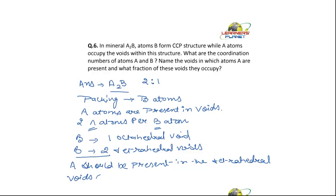So these all are present in the tetrahedral voids. And they are occupying all the tetrahedral voids. Right? It means what fraction is occupied? That is 100% of tetrahedral voids.